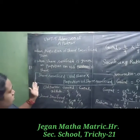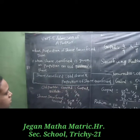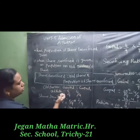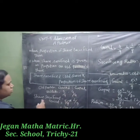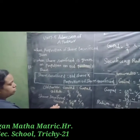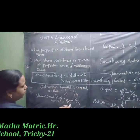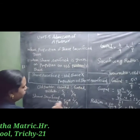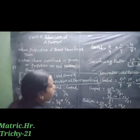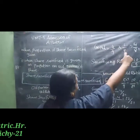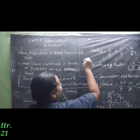Reviewing the second problem: share sacrifice formula is old share multiplied by proportion of share sacrifice. Partners Govindar and Gopal have old ratio 5 to 4, so old shares are 5/9 and 4/9. Govind's share sacrifice: 5/9 × 2/9 = 10/81. Gopal's share sacrifice: 4/9 × 1/9 = 4/81. Therefore sacrificing ratio equals 5 : 2.